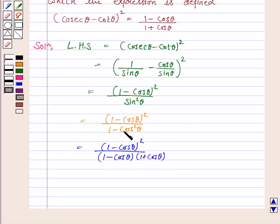Here we have used the formula of a square minus b square, and in this case a is 1 and b is cos theta.